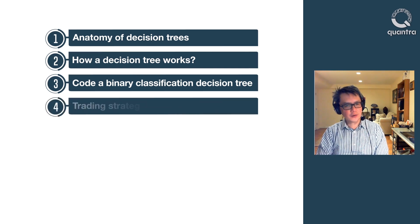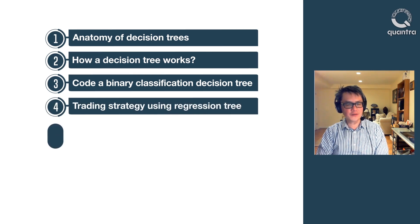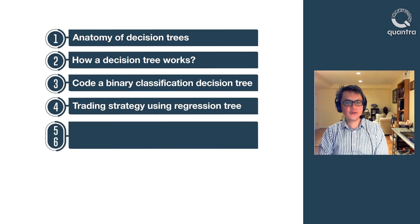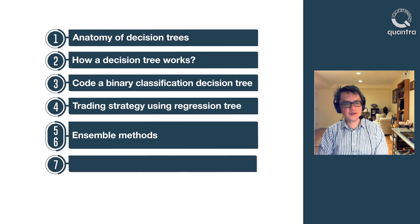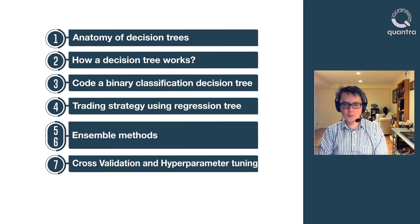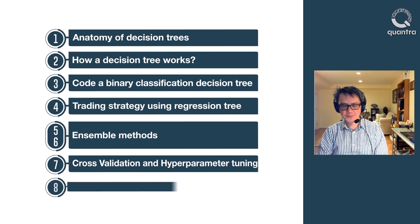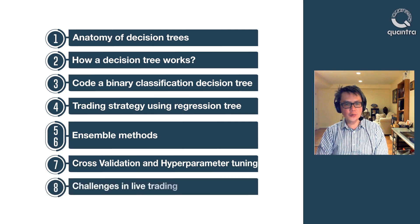In the fourth section, you will create a trading strategy using the predicted data of the closing prices of a stock. In the fifth and sixth sections of this course, we will discuss the ensemble methods, techniques to avoid overfitting and underfitting of the models. In the seventh section, you will learn about cross-validation and hyperparameter tuning, which are common techniques that you can apply to optimize any quantitative trading strategy. In the eighth section, you will learn how to handle some of the challenges that you might face when using a machine learning model in trading.